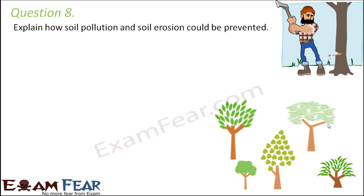Question number 8. Explain how soil pollution and soil erosion could be prevented. These are two threats to the quality of soil. It is very important that we protect the soil either from getting washed away by wind or water — that is erosion — or from getting contaminated with undesirable toxic components — that is pollution.